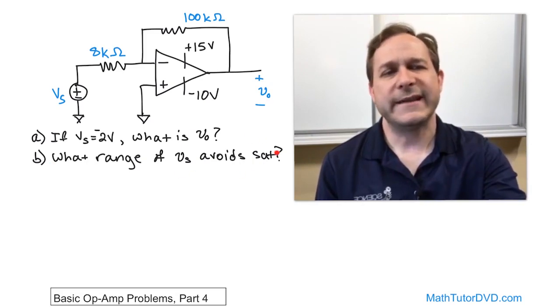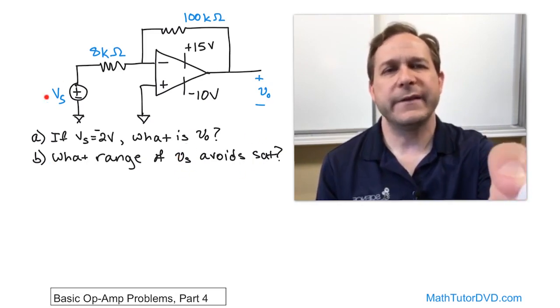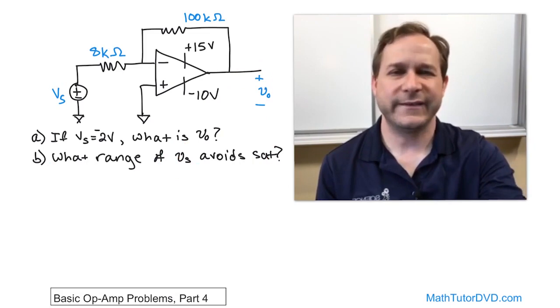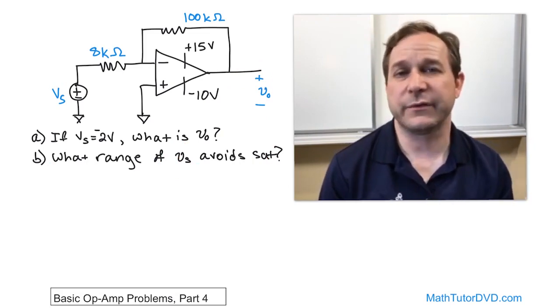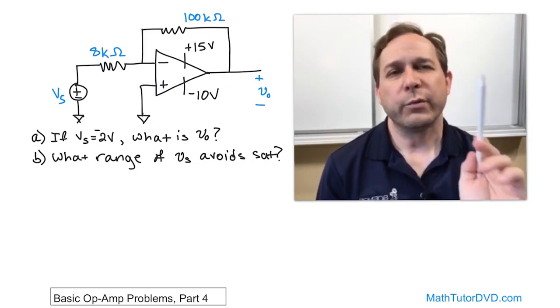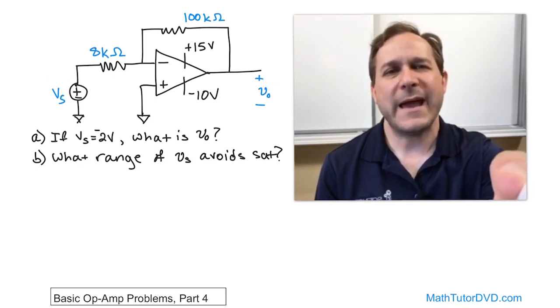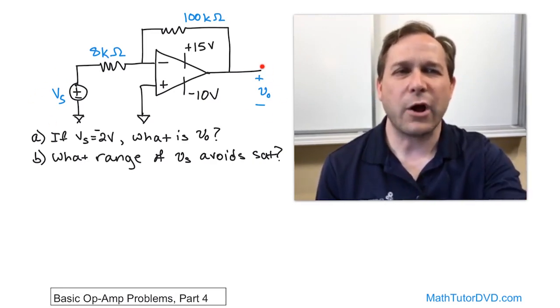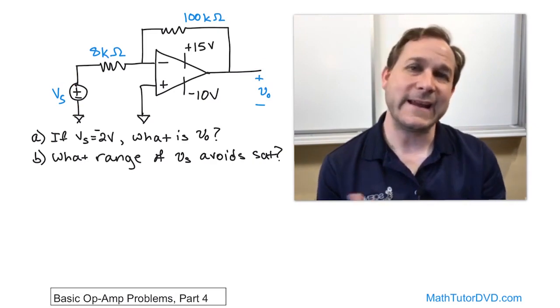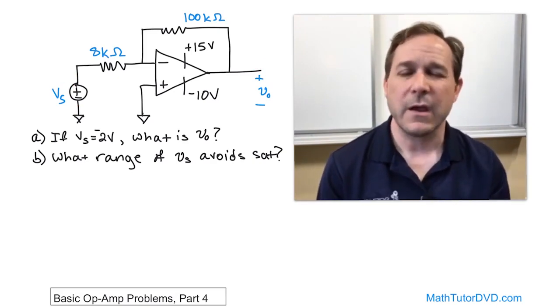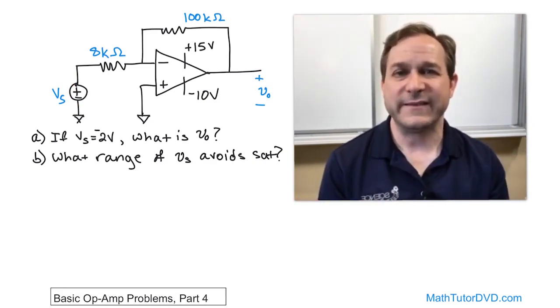Then we're going to figure out a totally separate question. What is the range of this voltage source that avoids saturation? That will look a little similar to what we did in the last section. We're going to figure out what is the minimum and the maximum value of this voltage source that will drive it all the way to plus 15 volts, and in the negative direction, all the way to negative 10 volts. What range of Vs does that?